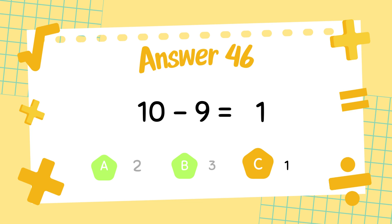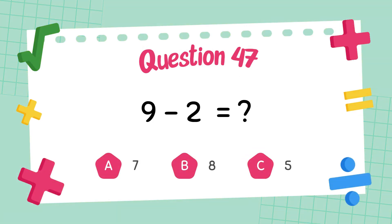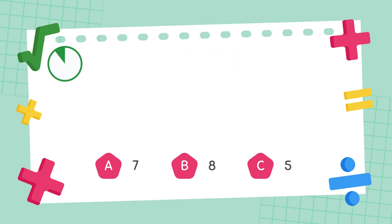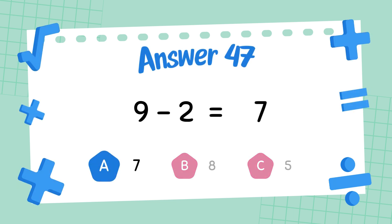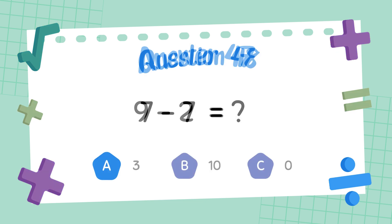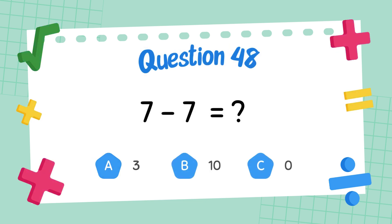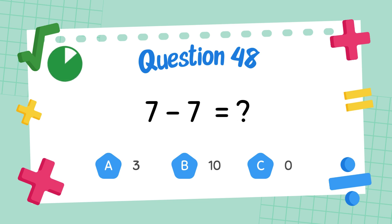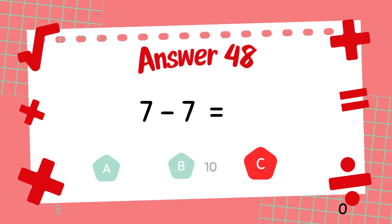The answer is 7. What is 7 minus 7? The answer is 8.